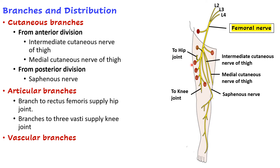There are two articular branches: one to the hip joint, carried via the branch to rectus femoris, and one to the knee joint, carried via branches to the three vasti. Because both the hip and knee joints are supplied by the same nerve, disease in one joint can cause referred pain in the other and vice versa. Vascular branches from the femoral nerve also supply the femoral artery.